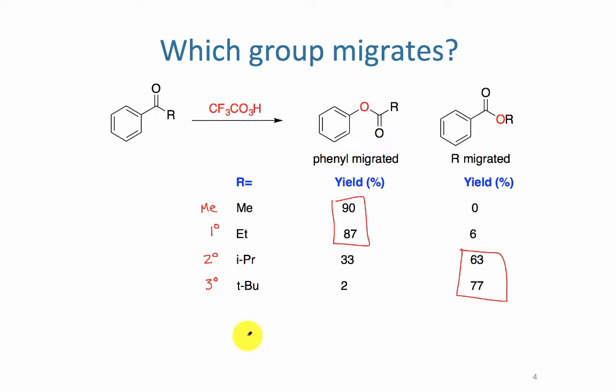Overall, what we can say is that a tertiary group, or a more substituted group, migrates more easily than the isopropyl, and a less substituted group migrates slightly more easily than phenyl, and all of those migrate more easily than a primary substituted R group.